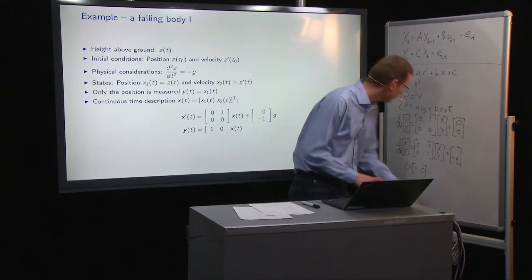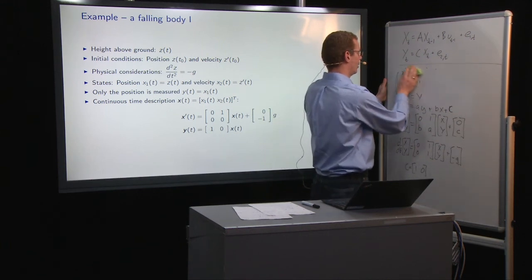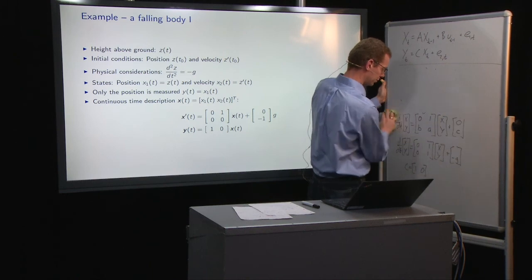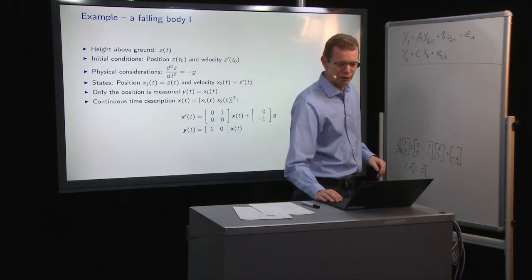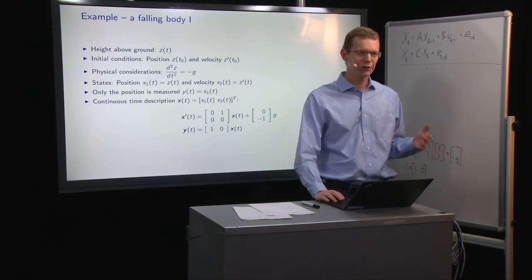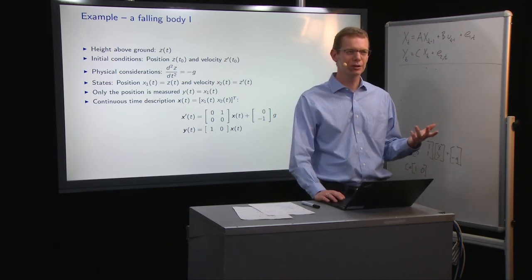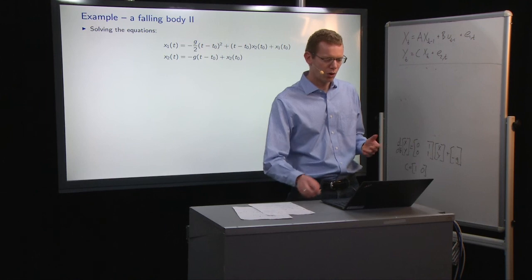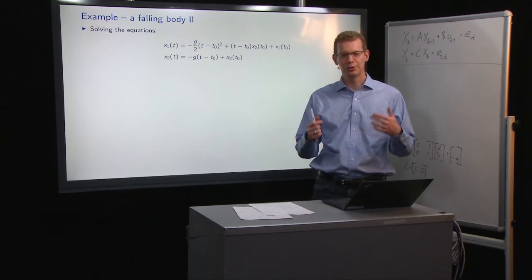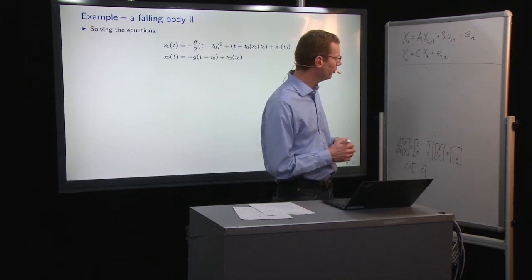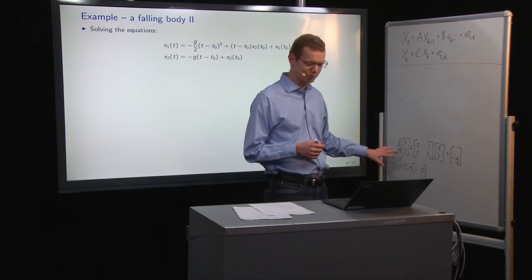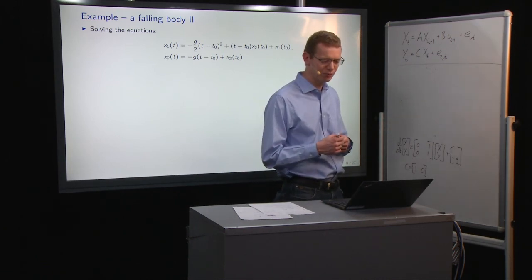So now, for memory, make some space here. So that's the definition or description of the system in continuous time. Now what we want to do is actually to get to discrete time. So one way of doing that is, well, we all know what the solution is to the falling body example.